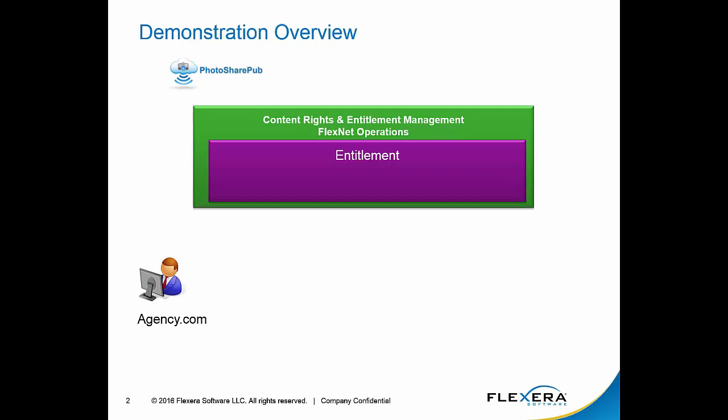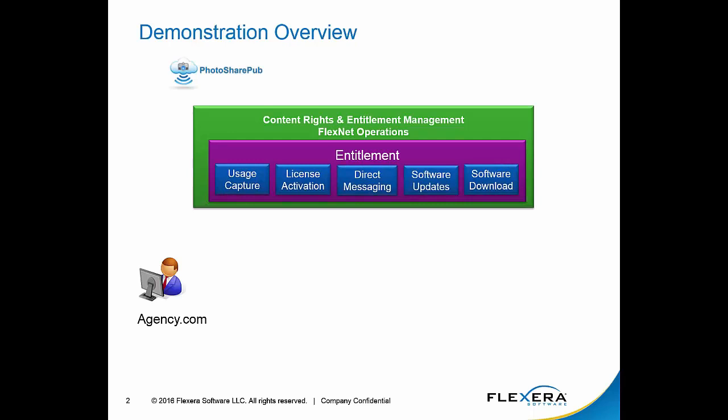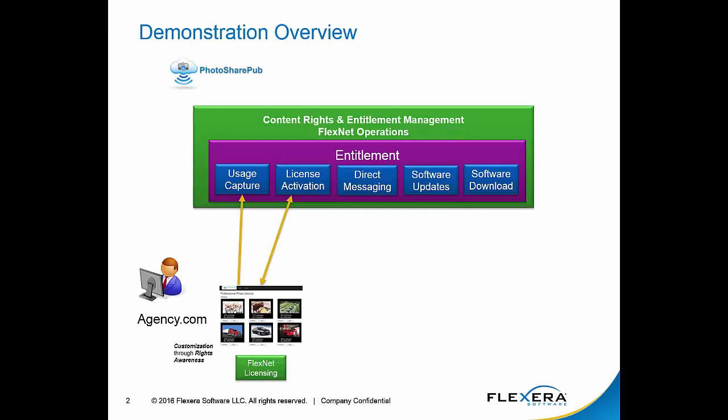an entitlement will be created which will govern many different activities and how Agency.com interacts with that content. The first interaction will be through a SaaS application where Agency.com will be able to view a catalog of content, preview different albums, and make decisions on content they may want to acquire. Certain usage information will be captured based upon the albums they acquire. And based on the different type of user from Agency.com, the SaaS application will be rights-aware, giving different access to different users.